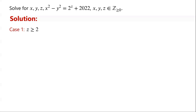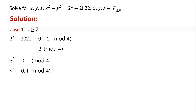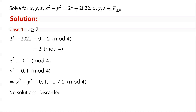Case 1: z is greater than or equal to 2. We know that 2 to the power of z is congruent to 0 modulo 4, and 2022 is congruent to 2 modulo 4. So 2 to the power of z plus 2022 is congruent to 2 modulo 4. However, x squared and y squared are each congruent to 0 or 1 modulo 4, so x squared minus y squared is congruent to 0, 1, or -1 modulo 4 — which is not congruent to 2 modulo 4. Therefore, the equation has no solutions when z is greater than or equal to 2. So z must equal 1 or 0.